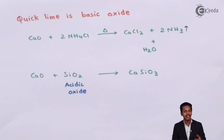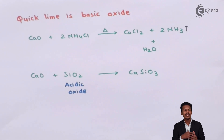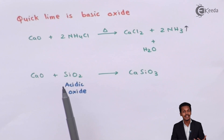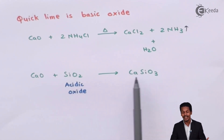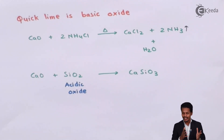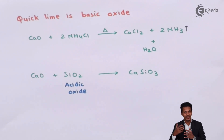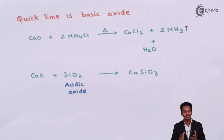Since quicklime is a basic oxide, it can easily react with acidic oxides. Calcium oxide reacts with SiO2 (silicon dioxide), and we get the salt CaSiO3. This demonstrates a reaction between a basic oxide and an acidic oxide. These were the chemical properties and preparations of different compounds that can be exhibited through calcium oxide.